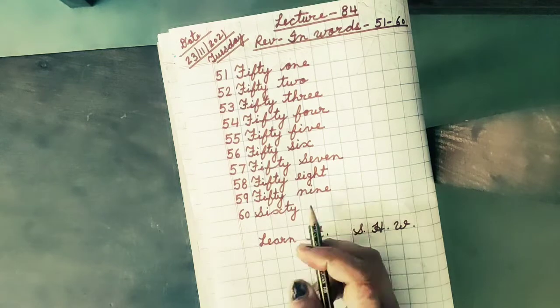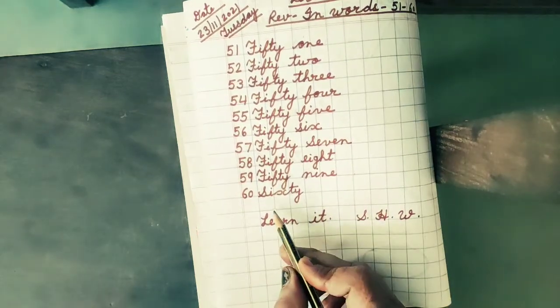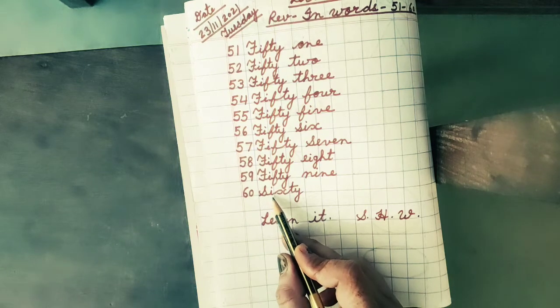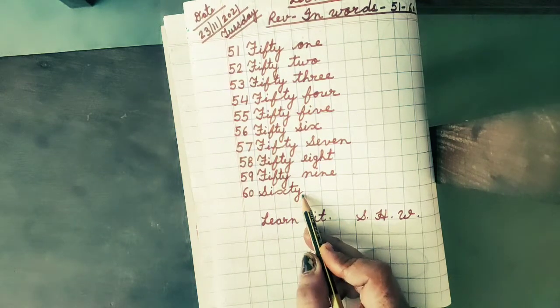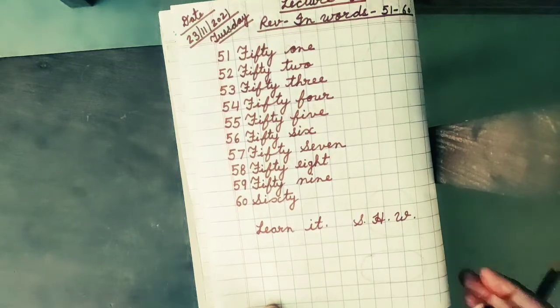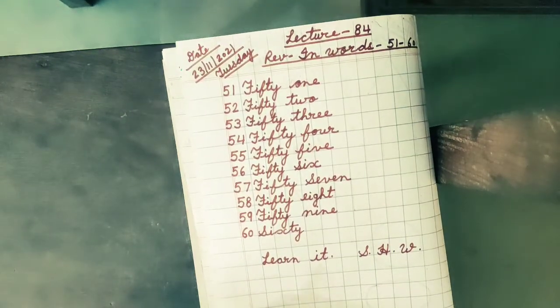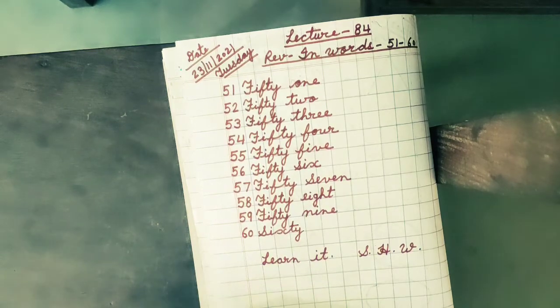Next spelling is 60. The spelling of 60 is S, I, X, T, Y, 60. Previous classes I taught you the numbers name. Hope you had studied well these spellings. Okay my dear students.